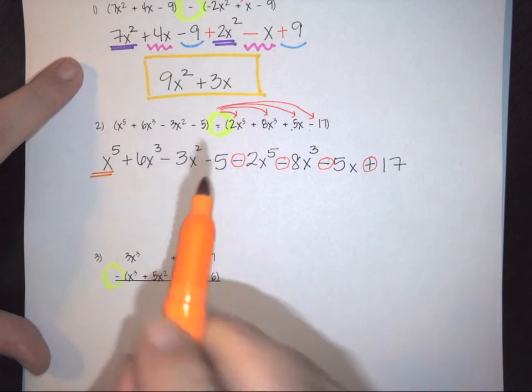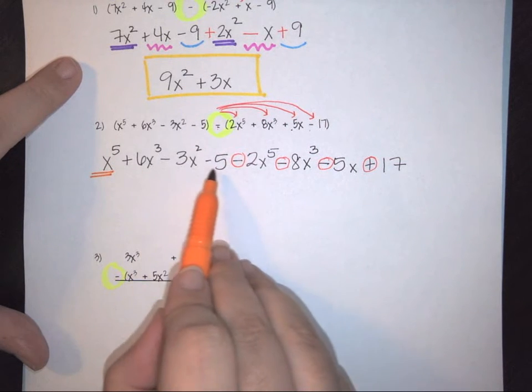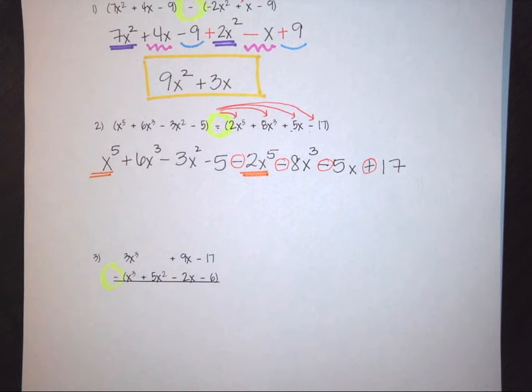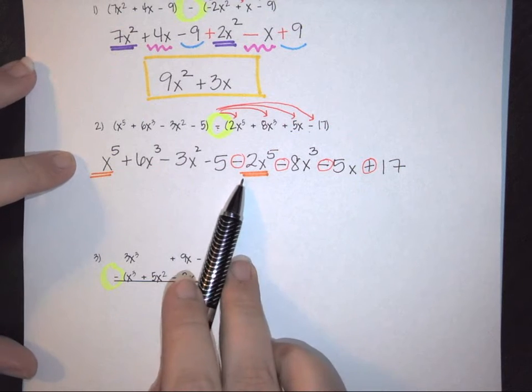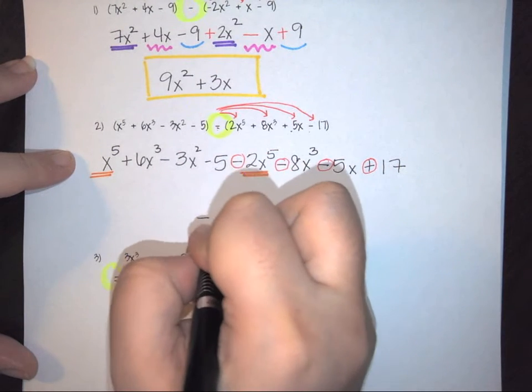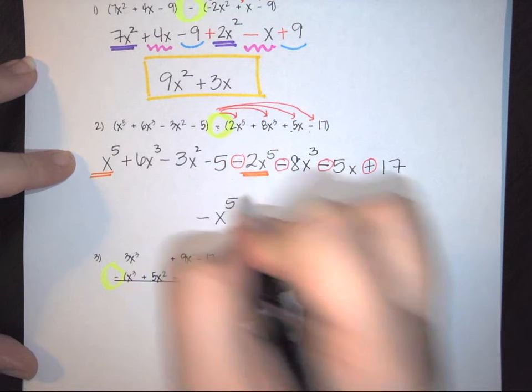So here I've got an x to the fifth. I'm going to scan down the line and come to another x to the fifth. And so those need to be combined. I have 1x to the 5th minus 2x to the fifth gives me a negative x to the fifth.